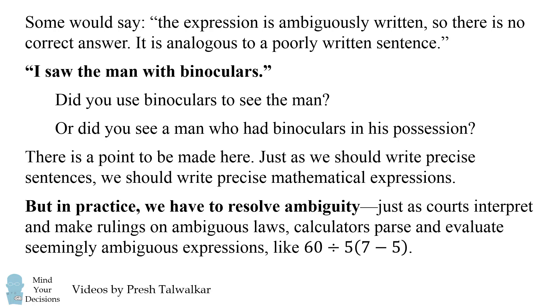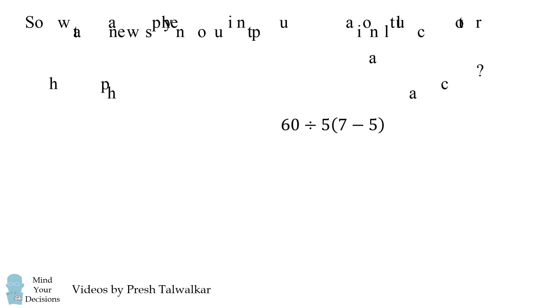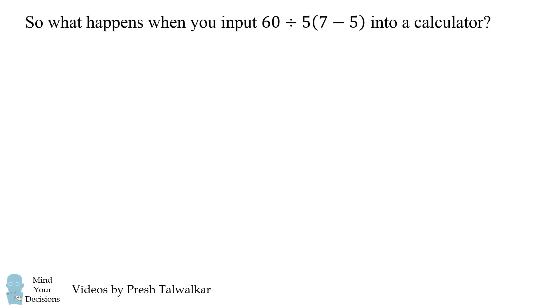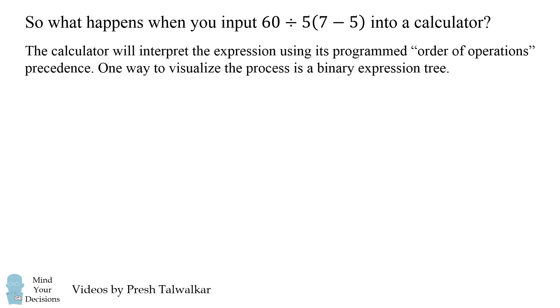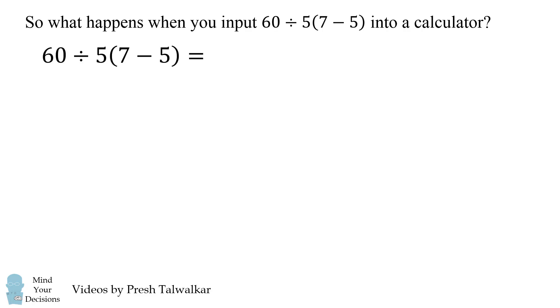So what do calculators do? How do they evaluate 60 divided by 5, parentheses, 7 minus 5? The calculator will interpret it using its programmed order of operations, its own precedence of how to evaluate different operators. One way to visualize the process is a binary expression tree. So imagine you put this into a calculator. It's going to make a guess about how to interpret this. And one way a calculator will interpret this is just as I explained using PEMDAS, by putting a parentheses between the 60 and the 5.